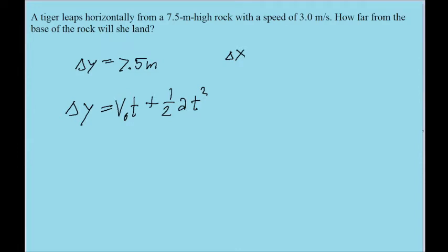Because, first off, this term cancels out, because at the beginning of the motion, as soon as she horizontally leaps, there's going to be no initial speed in that direction. And also, we've got time, which we want to find. And the acceleration is just g. It's just gravity. So let's solve this for t.